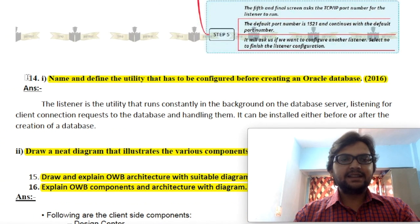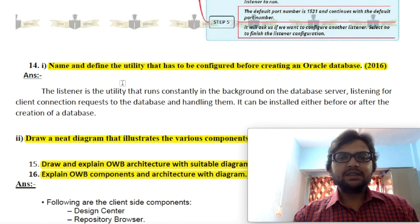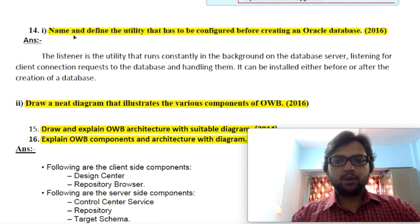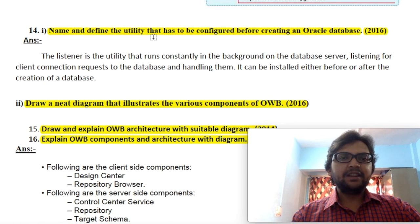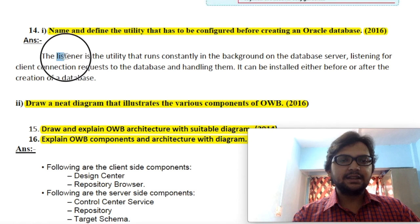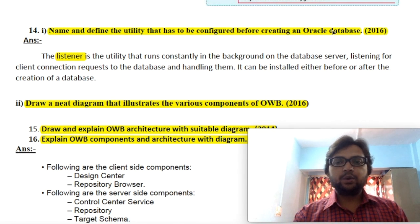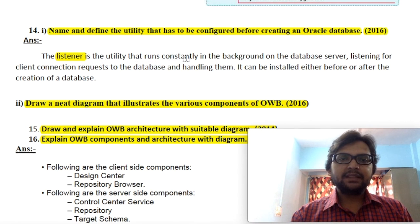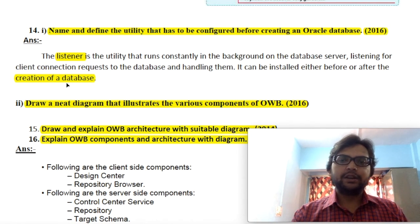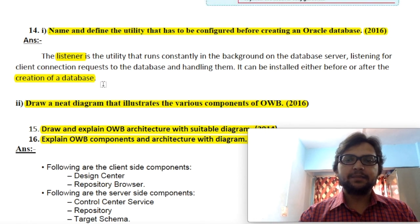Now let's discuss the next question: Oracle Warehouse Builder — this question is asked three times in exams. First, let's address the 2016 question part one: Name and define the utility that has been configured before creating an Oracle database. Which utility is required before creating an Oracle database? We need to configure a listener. So the answer is: a listener is the utility that runs constantly in the background on the database server, listening for client connection requests to the database and handling them. It is installed either before or after creation of a database.